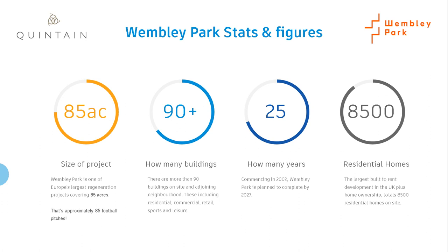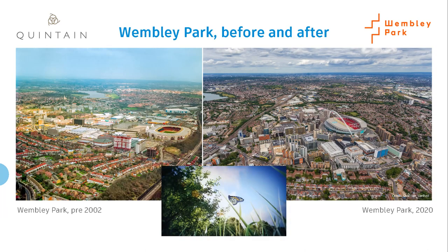A few stats about the project itself. It's 85 acres, which works out at about 85 football pitches. We've worked on around 90 buildings — that includes the buildings on site and the adjoining neighbourhoods — covering residential, commercial, retail, sports and leisure. Quintain commenced in 2002 and it's due for completion in 2027, so it's around 25 years of development, and there are eight and a half thousand residential homes on site. It's a massive site and we've been looking after all the CGI side of it.